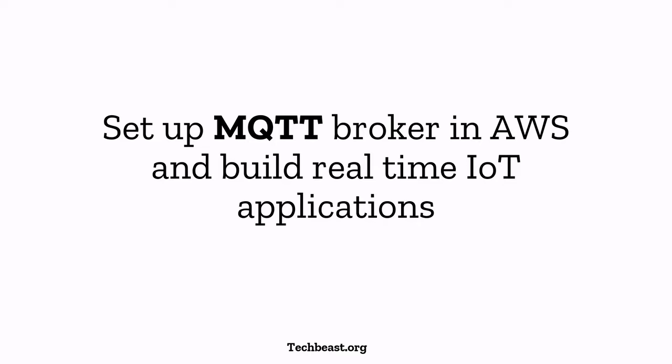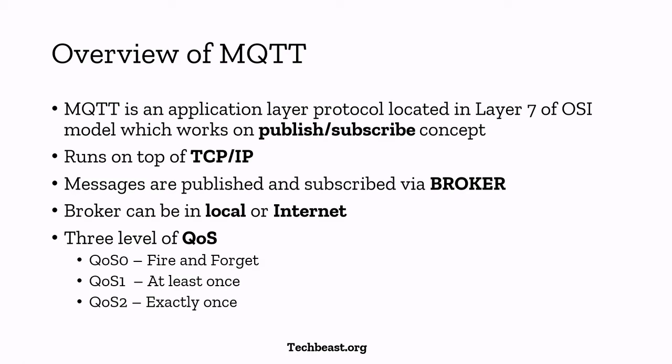Before we get into the hands-on, let's talk about some theory. I have made a separate video about the difference between HTTP, WebSocket, and MQTT and all these IoT protocols — the link is in the description. MQTT is an application layer protocol located at layer 7 of the OSI model, which works on a publish-subscribe concept. In HTTP we call it request and response, but in MQTT the terms we use are publish and subscribe. It runs on top of TCP/IP, similar to HTTP and WebSocket.